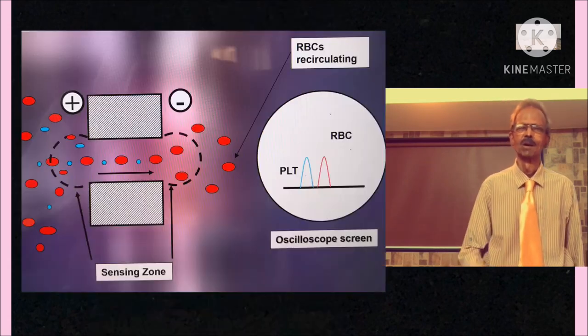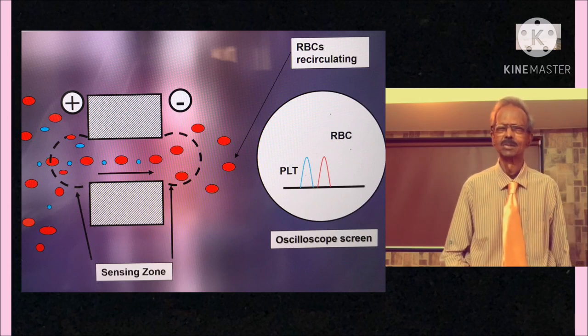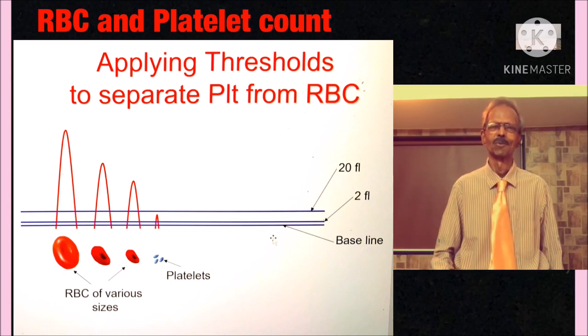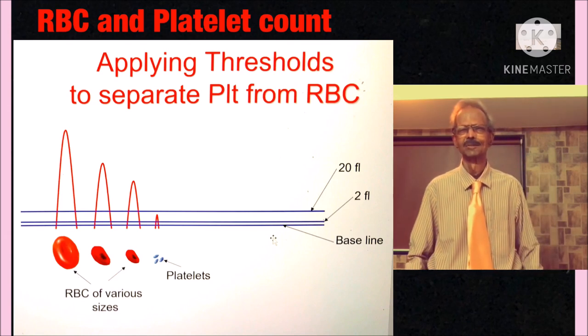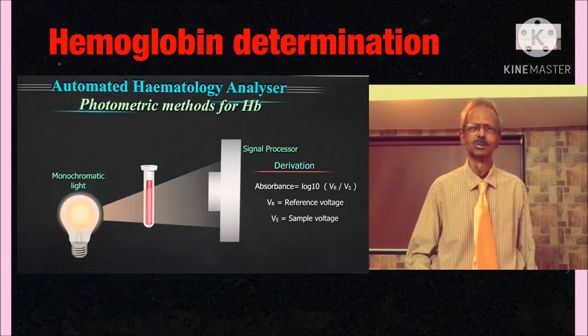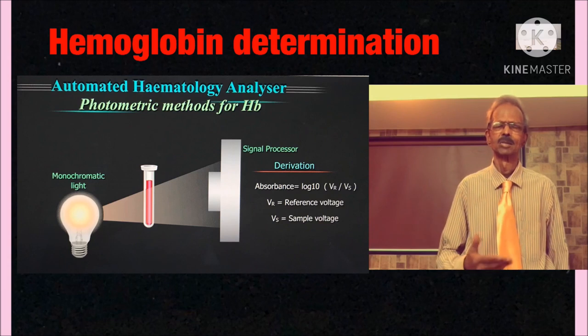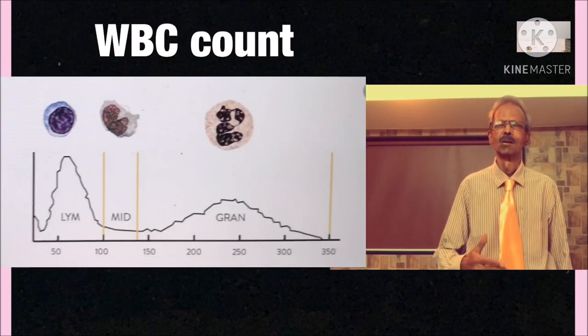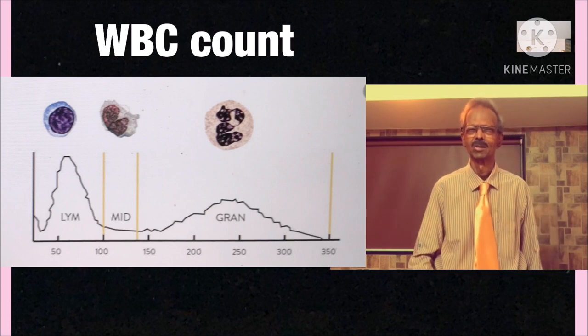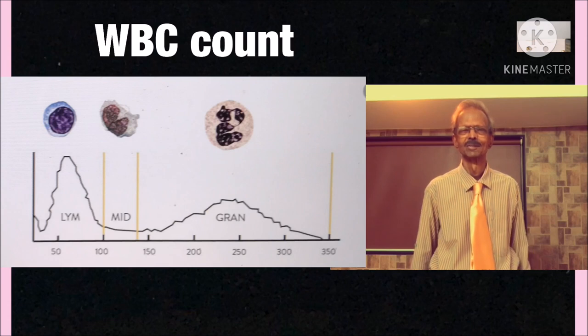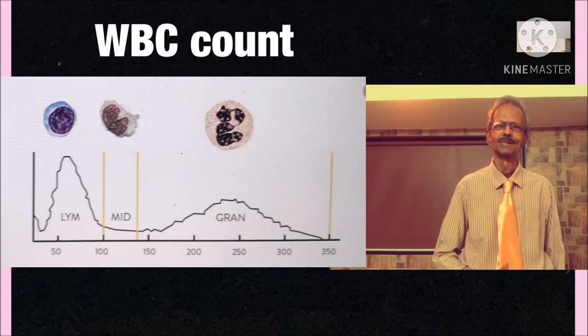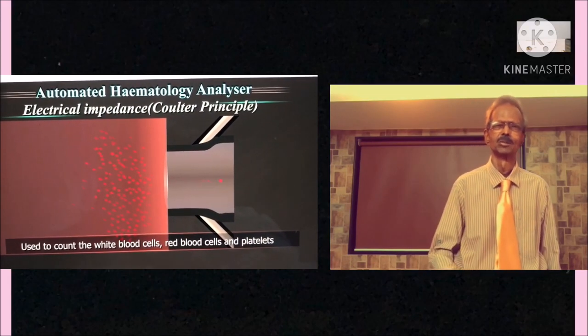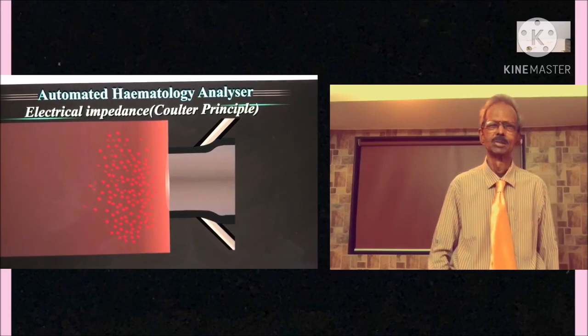Inside the analyzer, there are two chambers and in RBC chamber, cells less than 20 femtoliter are counted as platelets and cells between 25 to 350 femtoliter are counted as RBCs. In WBC chamber, all red cells are hemolyzed by WBC diluting fluid and hemoglobin is determined in a colorimetric unit and cells are counted as lymphocytes between 35 to 90 femtoliter, mononuclear cells between 90 to 160 femtoliter and granulocytes between 160 to 450 femtoliter. It is important to note here that in RBC chamber, blood is diluted 50,000 times and in WBC chamber, it is diluted 500 times.